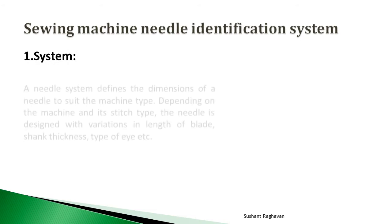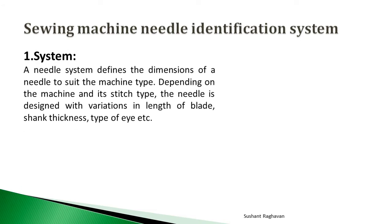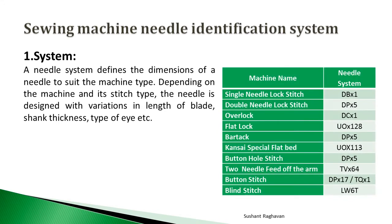System: A needle system defines the dimensions of a needle to suit the machine type. Depending on the machine and stitch type, the needle is designed with variation in length of blade, shank thickness, and type of eye. Some of the systems are: Single needle lock stitch — DB1; Double needle lock stitch — DP5; Overlock — DC1; Flat lock — UO 128; Bartack — DP5.